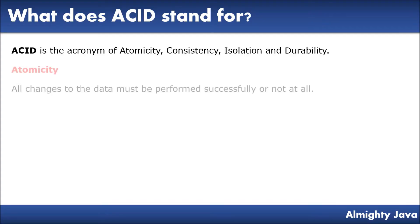Atomicity: all changes to the database must be performed successfully or not at all. So if any of the operations fail, then it must roll back the entire transaction.